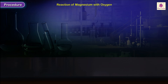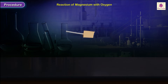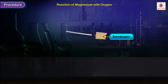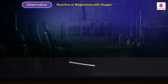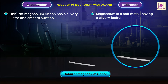Procedure — reaction of magnesium with oxygen. Observe the color and luster of the given piece of magnesium ribbon. If it appears dull, polish both its surfaces with a fine emery paper until it gets a shiny silvery color. Observation: unburnt magnesium ribbon has a silvery luster and smooth surface. Inference: magnesium is a soft metal having a silvery luster.